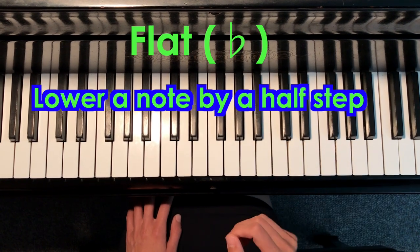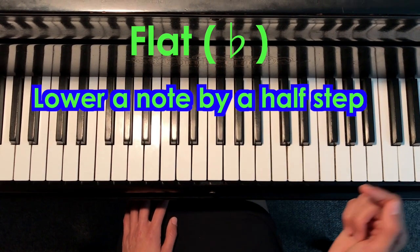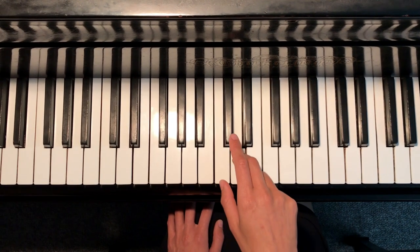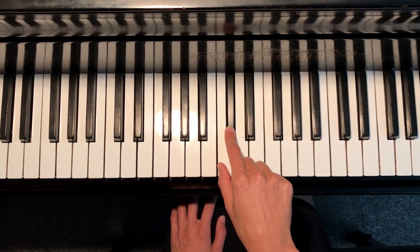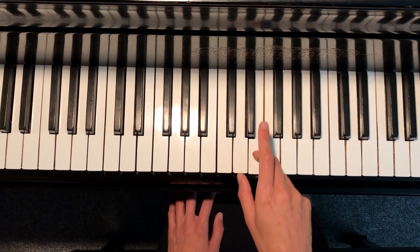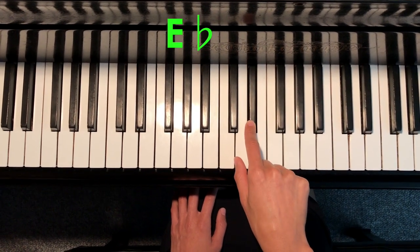Now a flat is a symbol that tells us to lower a note by a half step. If we take D and we lower it a half step, we go to this note, which is known as D flat. If we find E and we lower it a half step, we get to the note E flat.